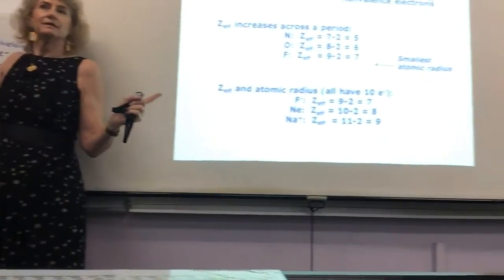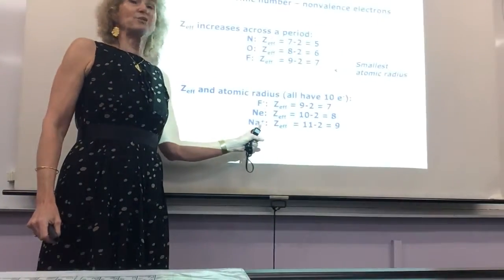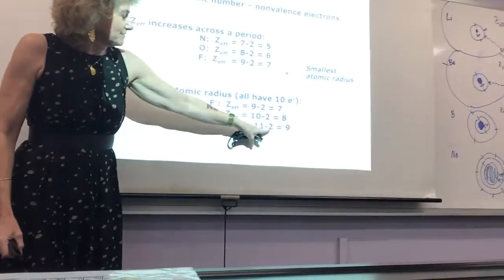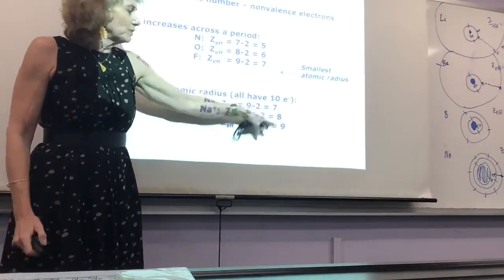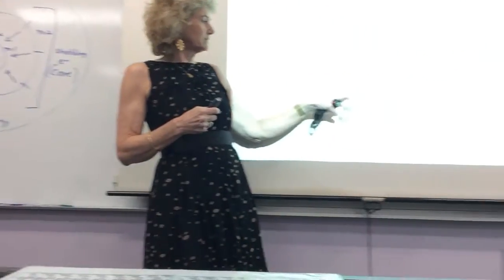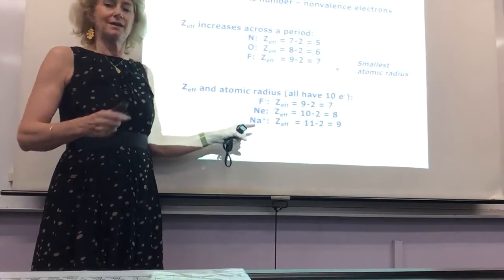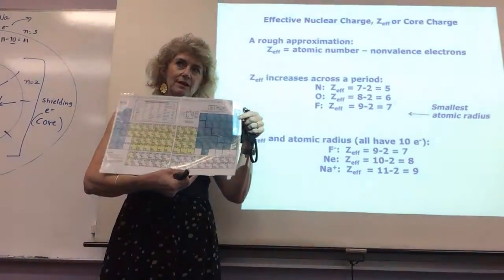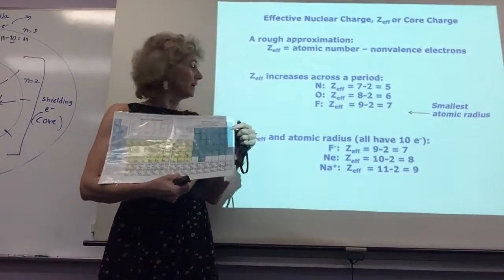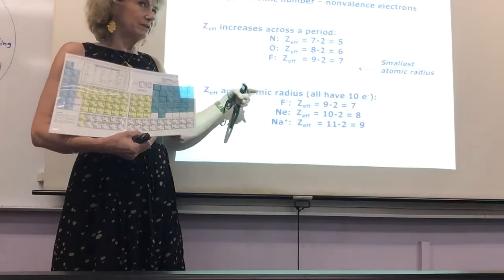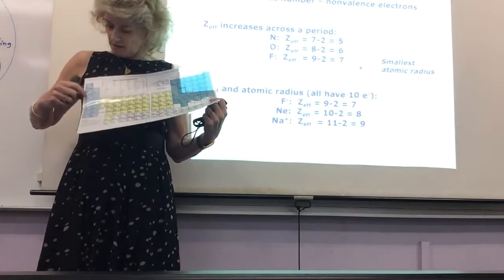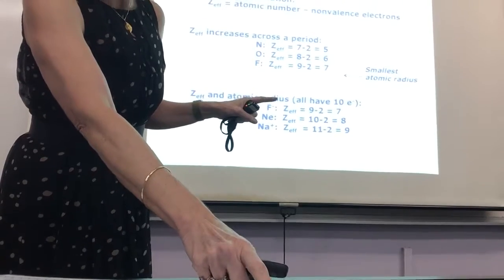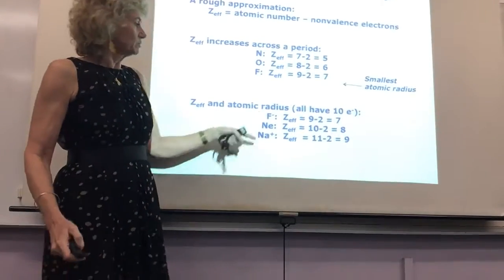How about fluoride ion, neon, and sodium ion? You do the same calculation. Fluorine is 9, neon is 10, sodium is 11. What's the same on all? The core — they all have the neon electron configuration: 2s2, 2p6. But which one's smaller? Sodium ion — because 11 minus 2 equals 9, the highest Z effective. Proton count is bigger here, but the core stays the same. So the sodium ion has a smaller radius than neon, which is smaller than fluoride ion.